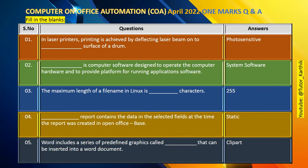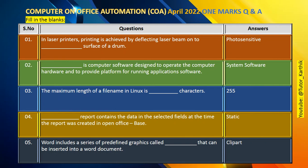When we install an OS, all the software that comes with it is system software. Additionally, the applications we install separately are application software. For example, when we install Windows, the software that comes with it is system software — that is the platform to run the application software. MS Office is an example of application software. System software is the OS.